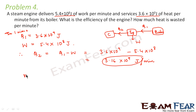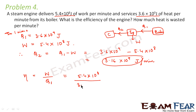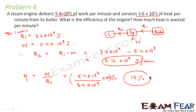The next part asks for the efficiency. Efficiency η = work done by the engine divided by the heat taken from the boiler = (5.4 × 10^8) / (3.6 × 10^9), which comes out to be 15%. So the efficiency of the engine is 15%.